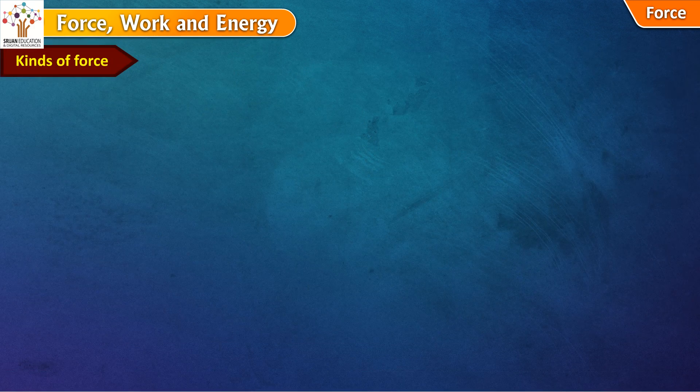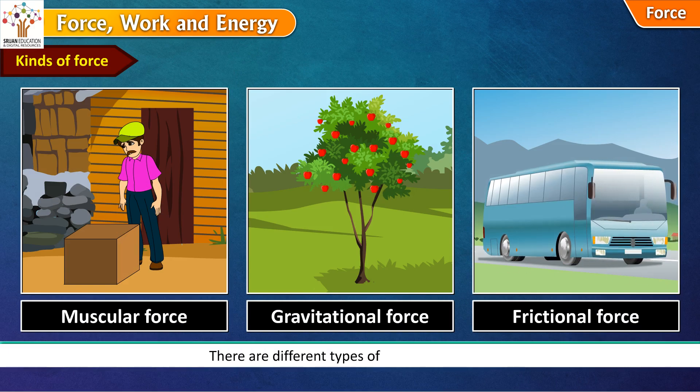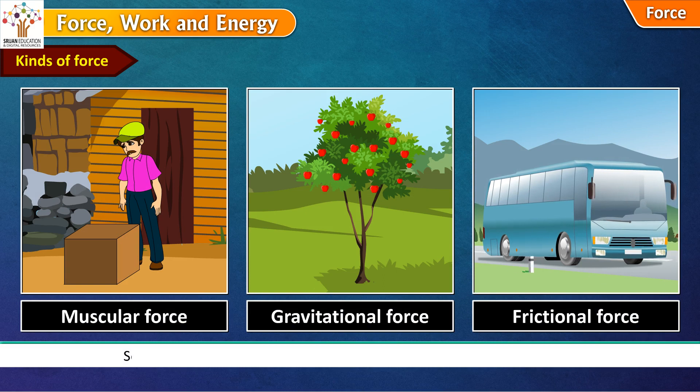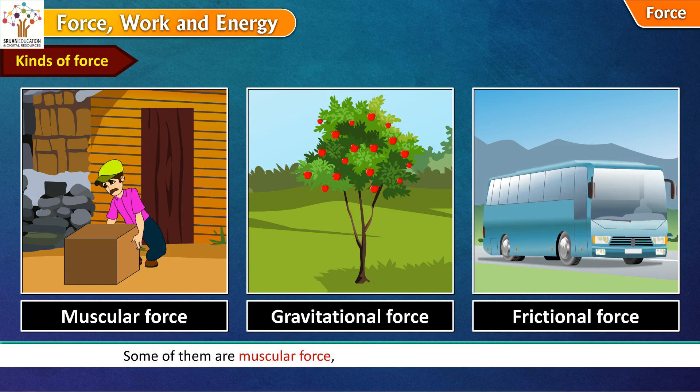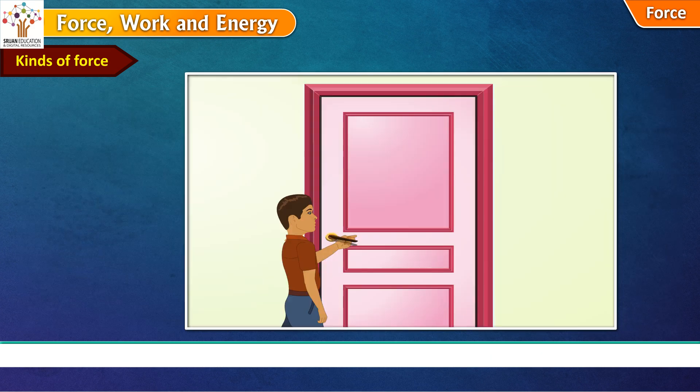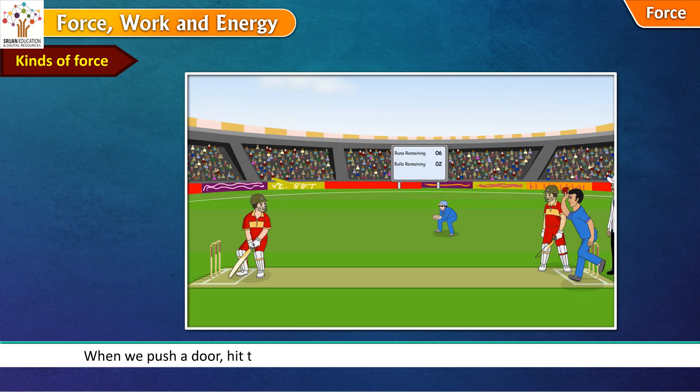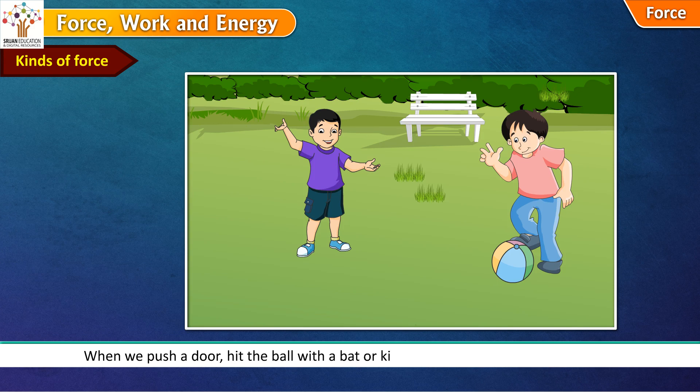Kinds of force. There are different types of forces around us. Some of them are muscular force, gravitational force and frictional force. When we push a door, hit the ball with a bat or kick a ball, we use the muscular force.